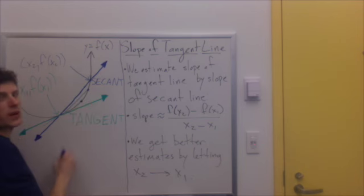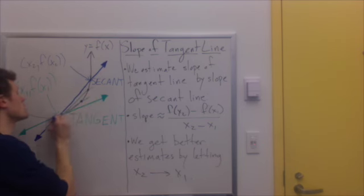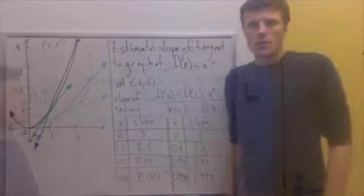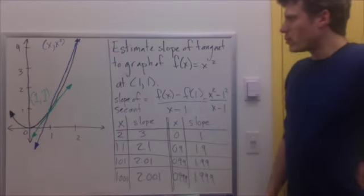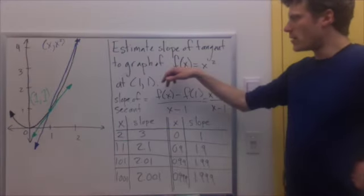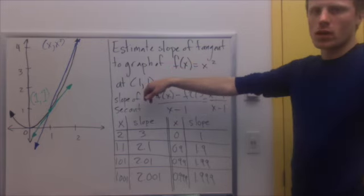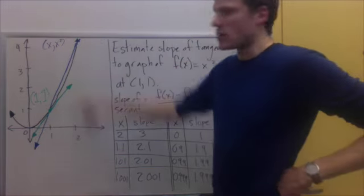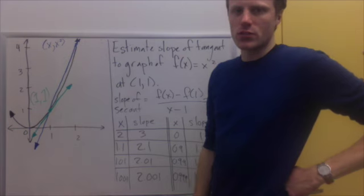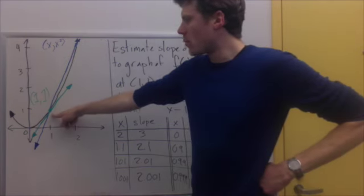Now I can take a better value for x2 and get an even better secant line, and so on. Let's do an example. Let's estimate the slope of the tangent line to the graph of f of x equals x² at the point (1, 1). So this parabola right here is the standard parabola, y is equal to x². And the point we're interested in is (1, 1).